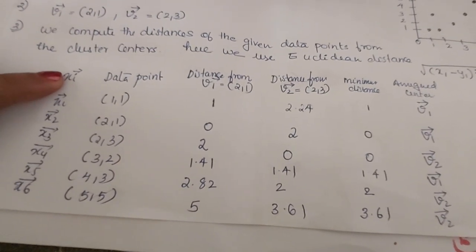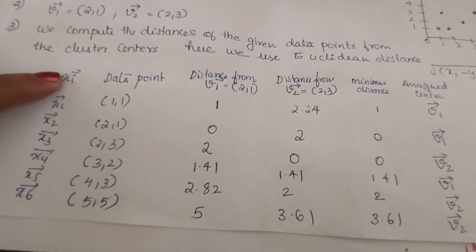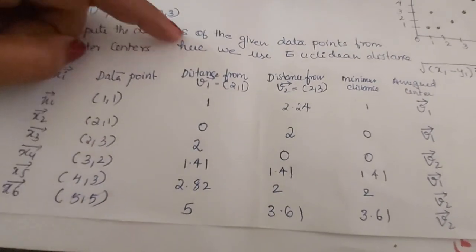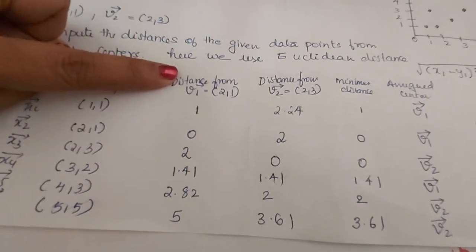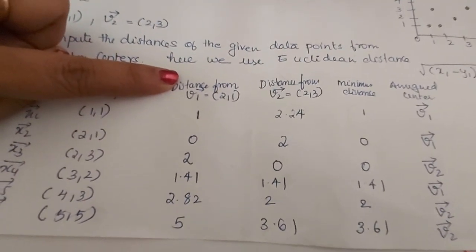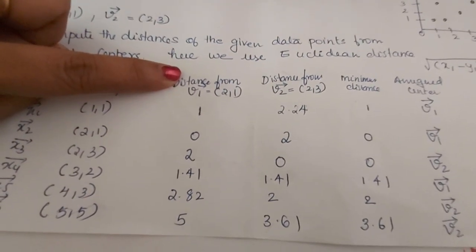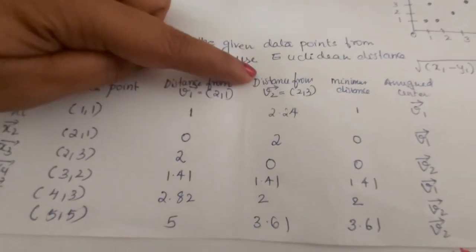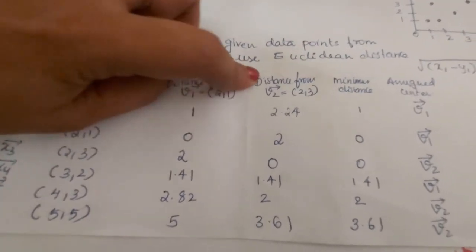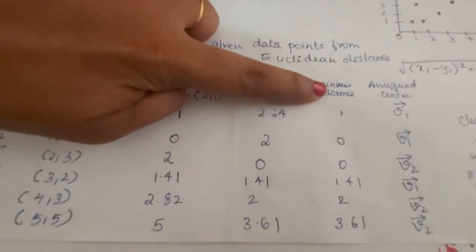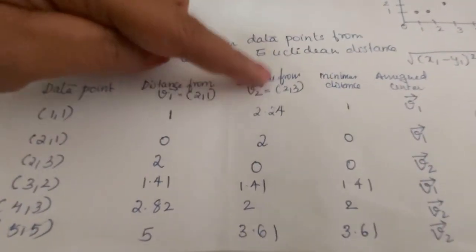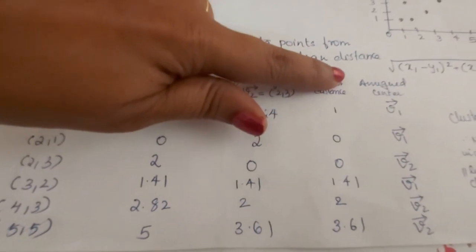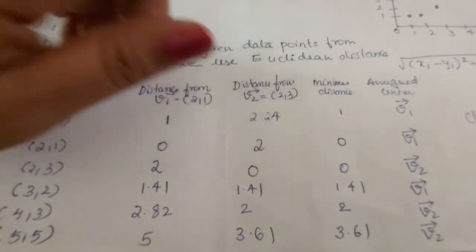The table consists of all xi data points, distance from center v1, distance from center v2, the minimum distance between those two, and the assigned center.